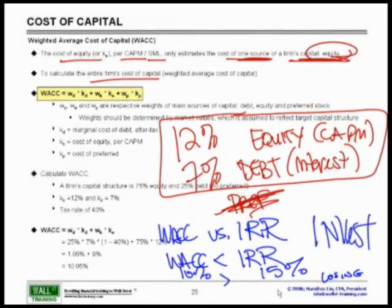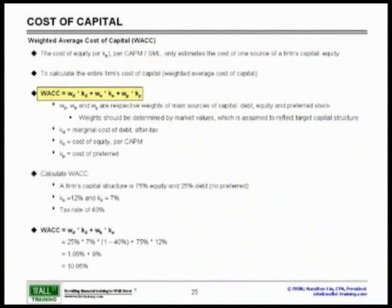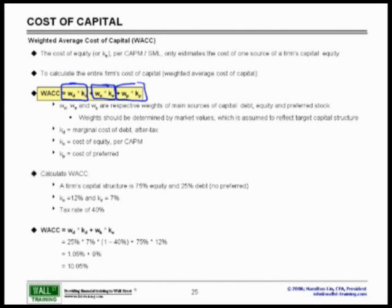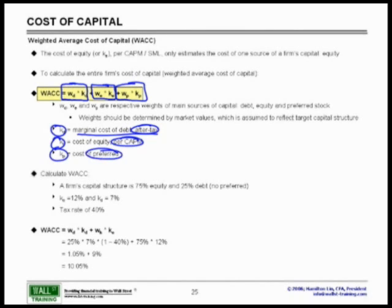So now let's look at how we calculate the weighted average cost of capital — it's a very straightforward formula. Going back to our WACC: if we have our cost of debt and the percentage of funds that came from debt (our weight on debt), our cost of equity via CAPM and the respective weight of equity, and the same for preferreds — we take a simple weighted average. The cost of debt is the marginal cost of debt on an after-tax basis, cost of equity is via CAPM, and cost of preferred is whatever the preferred cost is.